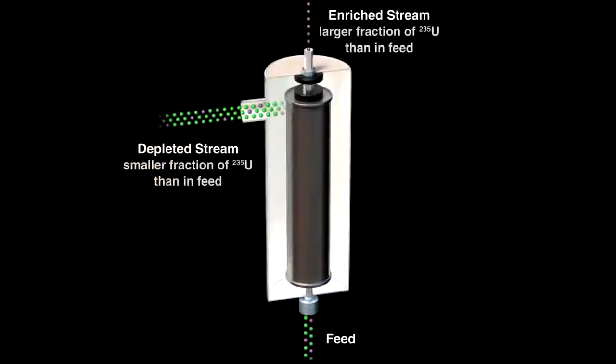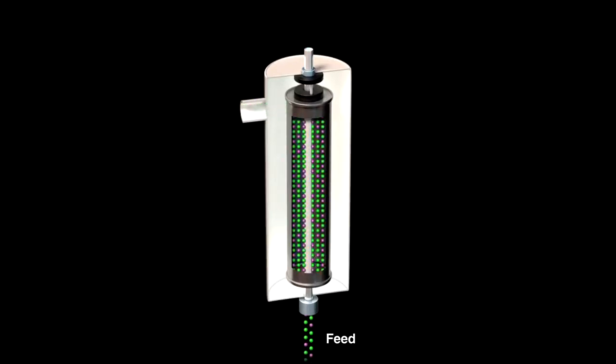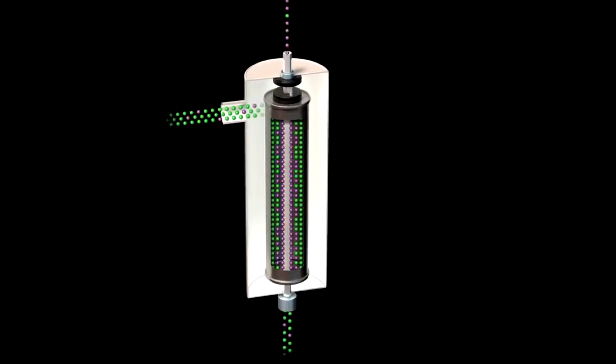Another method of separation exploits the small mass difference by using a centrifuge. A typical device consists of a stationary outer cylinder and an inner rotor that spins. A gaseous mixture of the two isotopes flows up a tube along the central axis, filling the rotor. As it spins rapidly, more of the U-238 is thrown out to the edge than the lighter U-235, which stays closer to the middle. The enriched stream can be removed from the rotor and sent to another centrifuge to be separated even more.